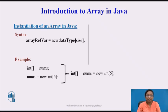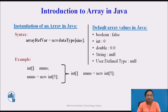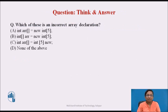We can write the declaration of an array variable and instantiation of the array in a single statement. The elements in the array allocated by the new operator will automatically be initialized to 0 for numeric types, false for boolean type, 0.0 for double data type, and null for reference types (user-defined data types). Now you can pause the video and answer the below question.